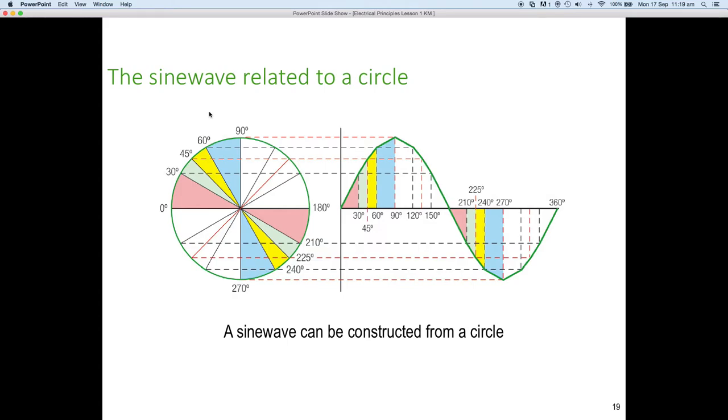So, a sine wave obviously is related to a circle. A sine wave can be constructed from a circle. So, if you were to take a circle and start it on the left-hand side here at zero degrees and rotate around and you were to project at 30 degrees and mark at 30 degrees on the horizontal. So, effectively, we're taking the circumference of the circle and laying it out on the horizontal and then projecting the points of the circle onto the vertical and then plotting the sine wave.